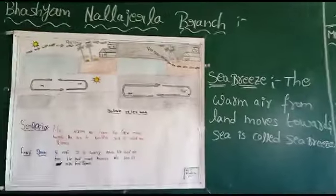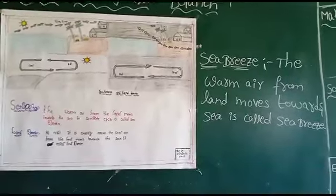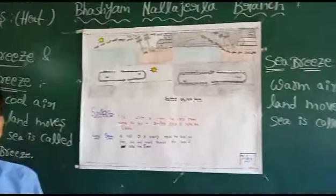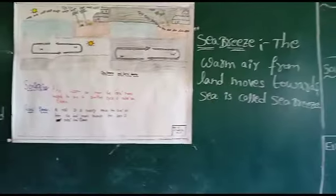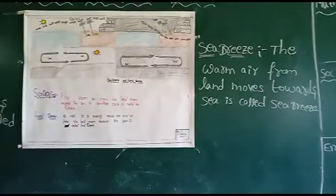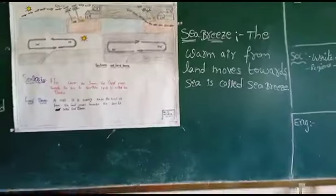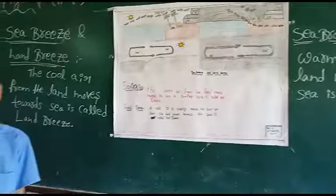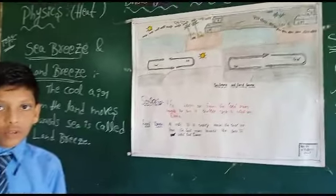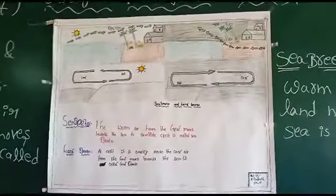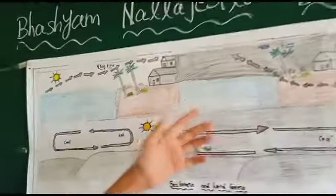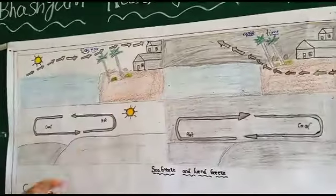The first part of it is Sea-breeze and Land-breeze. The one where the wind moves towards the sea is called Sea-breeze. The one where the wind moves towards the land is called Land-breeze. This is the diagram of Sea-breeze and Land-breeze.